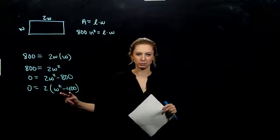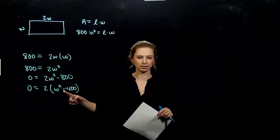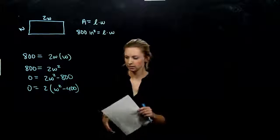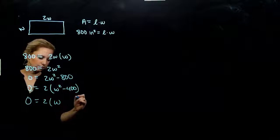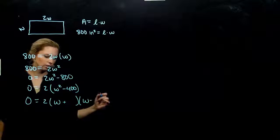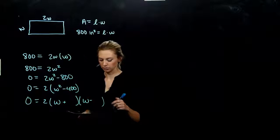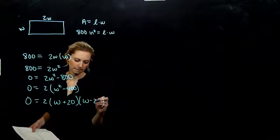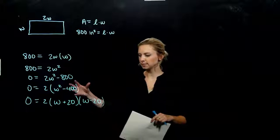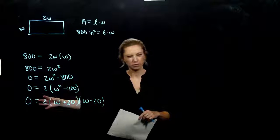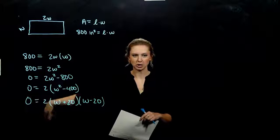We have a binomial — two terms with a difference in the middle. So the first question is: is it a difference of squares? And it is. Those squares are W plus and minus what value? One number times what number gives 400? That's 20. So we factor to get 2 times (W + 20)(W − 20). We've factored, and now we have things being multiplied. The factor of 2 doesn't have a W, so we divide everything by two to get rid of it.